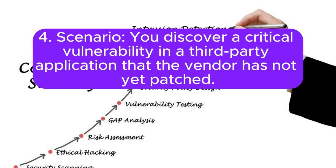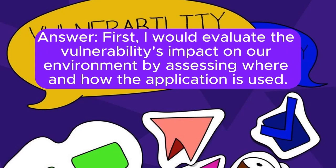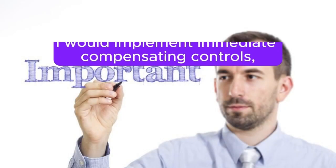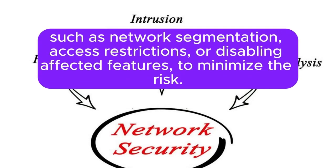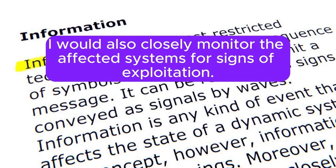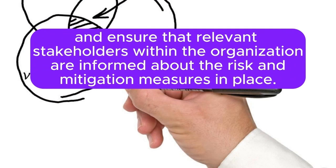Scenario 4: You discover a critical vulnerability in a third-party application that the vendor has not yet patched. What steps do you take? I would evaluate the vulnerability's impact on our environment by assessing where and how the application is used. I would implement immediate compensating controls such as network segmentation, access restrictions, or disabling affected features to minimize the risk, and closely monitor the affected systems for signs of exploitation. Additionally, I would maintain regular communication with the vendor for updates on a patch and ensure that relevant stakeholders within the organization are informed about the risk and mitigation measures in place.